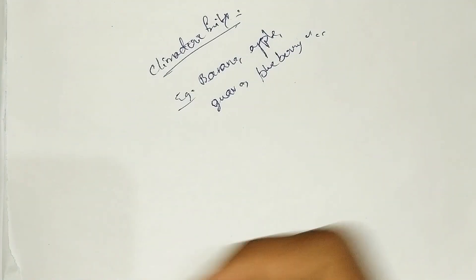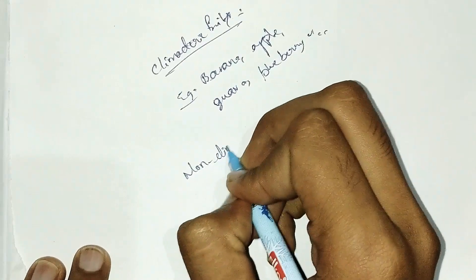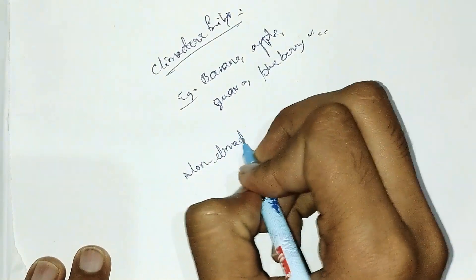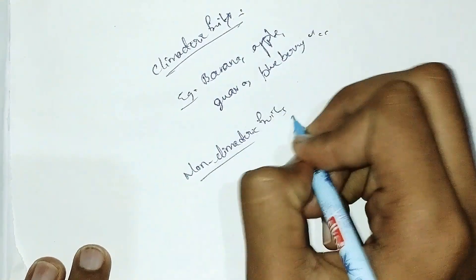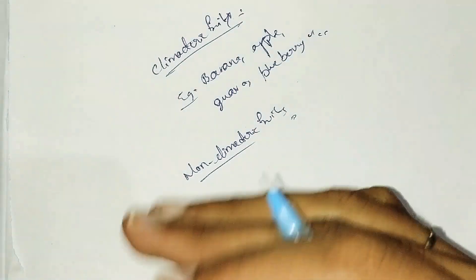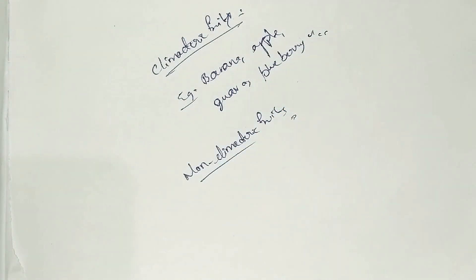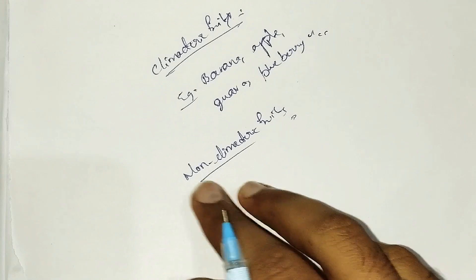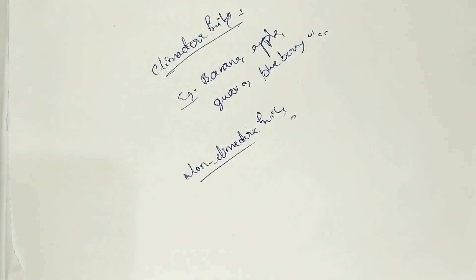Next, non-climacteric fruits. The fruits which cannot ripen after being removed from the plant — in non-climacteric fruits, they will not be ripened once removed from the plant.